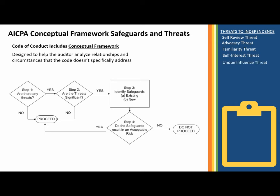Undue influence is another threat. What if the client says, 'If you don't finish this report the way we want it to, we're not going to hire you back next year'? That's the negative side. On the positive side, they could offer box seats to a football game — expensive tickets — trying to get you to agree to something related to the audit that you should apply professional skepticism to.